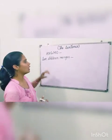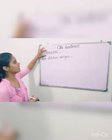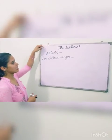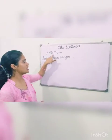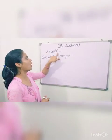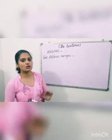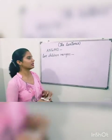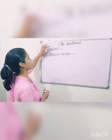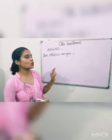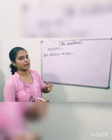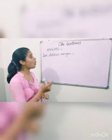Firstly, look at these letters: A, N, G and O. There is no meaning, there is no correct word. Each word ka koi meaning nahi nikar la hai.